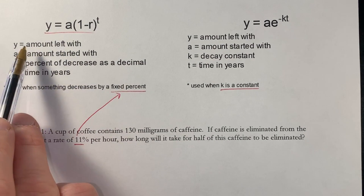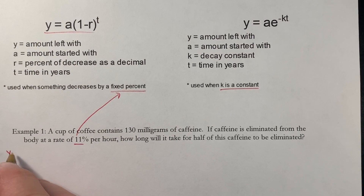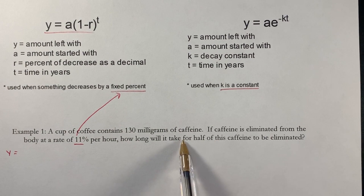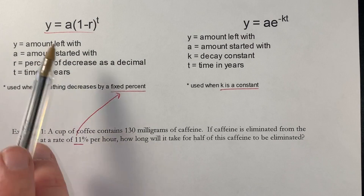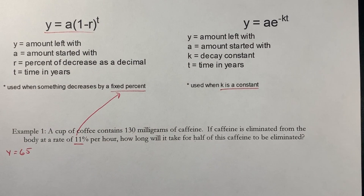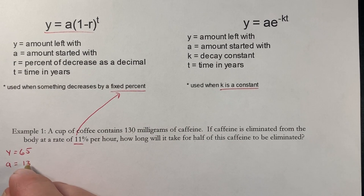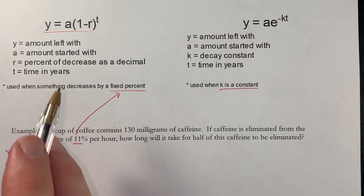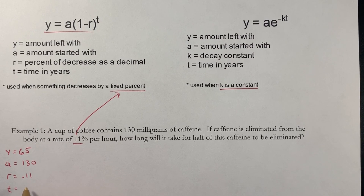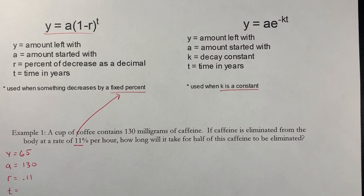Y is the amount that we have left. We want to know when half the caffeine is eliminated — we started with 130, so the amount left will be half of that, which is 65. A is the amount we start with: 130 milligrams. R is the percent of decrease written as a decimal, so that's 0.11. T is the time — in this case hours — and that's our unknown variable.